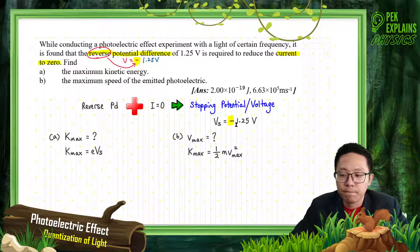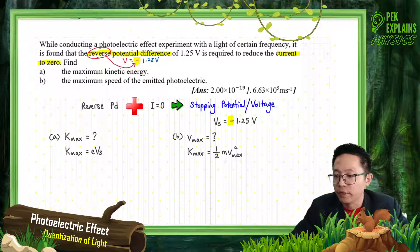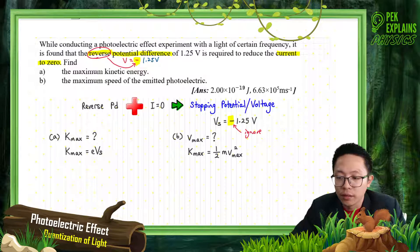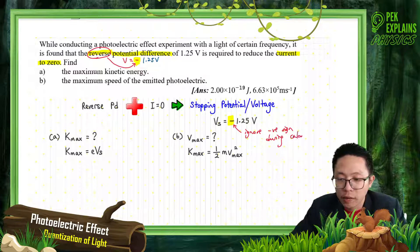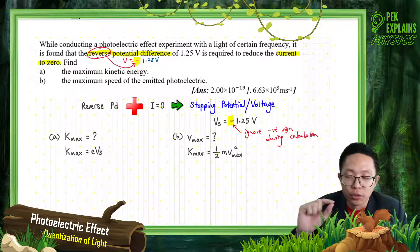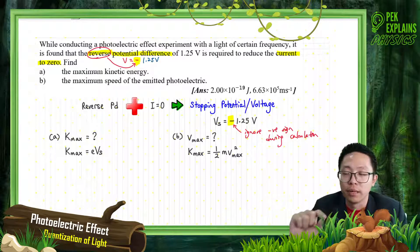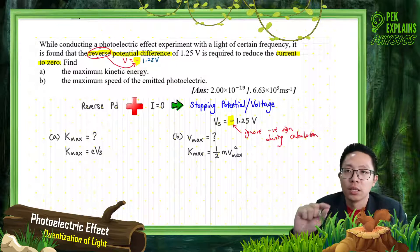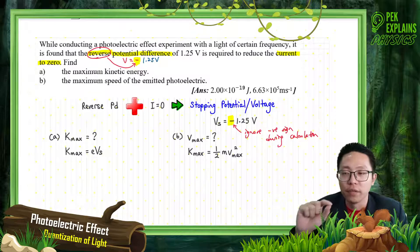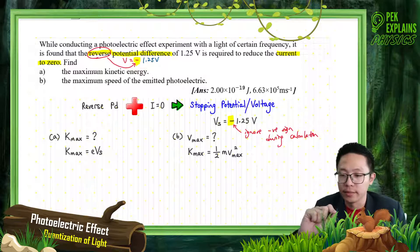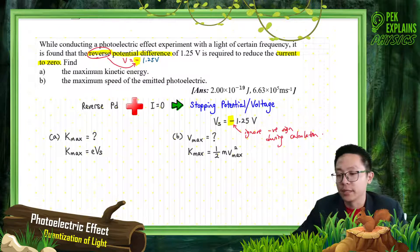During calculation, ignore the negative sign. You only provide the negative sign for your final answer if the question asks about stopping voltage — then you need to give the stopping voltage with a negative sign. Just for the final answer. But for calculation, ignore the negative sign.